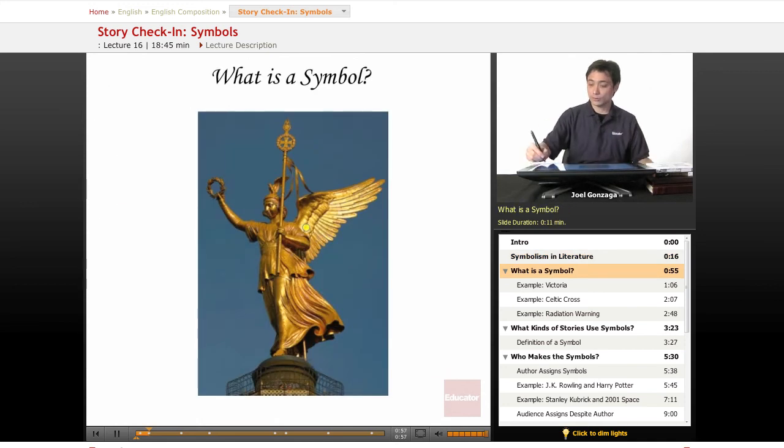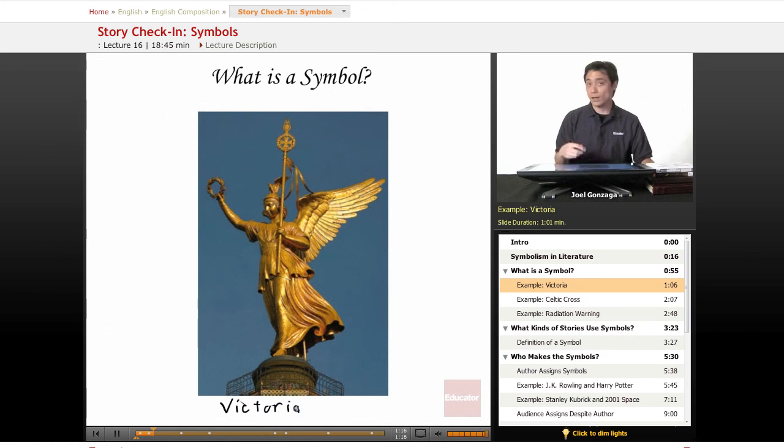Oh wow, here's a symbol. This is a symbol of a big golden statue with wings and a staff and a golden wreath. Well it turns out that this statue is a symbol. Specifically it is the Roman goddess Victoria. And I bet you can figure out what she is a symbol for. Well she's a symbol for victory.